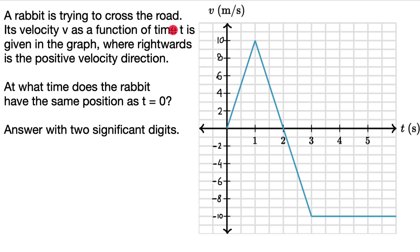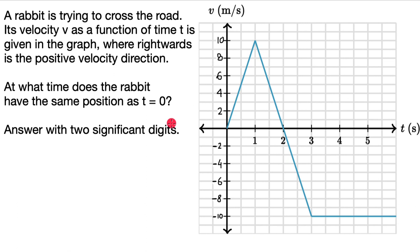A rabbit is trying to cross the road. Its velocity v as a function of time t is given in this graph, where rightwards is the positive velocity direction. At what time does the rabbit have the same position as t equal to 0? Answer with two significant digits.